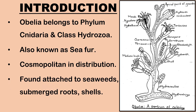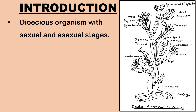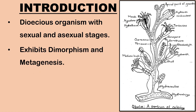It is found attached to seaweeds, submerged roots and shells. Obelia is a dioecious organism with distinct sexual and asexual life stages. It exhibits dimorphism and metagenesis with a sessile or sedentary polyp stage and a free-swimming sexual medusa stage.